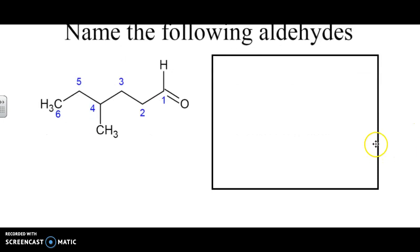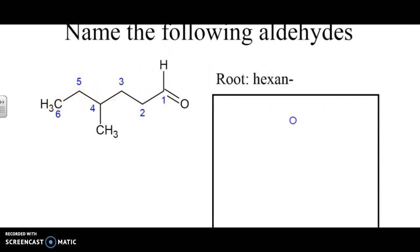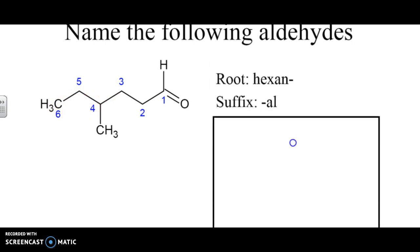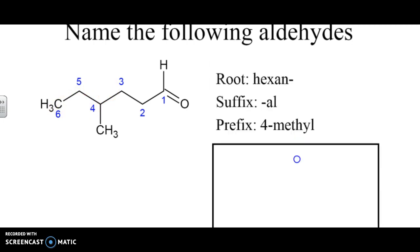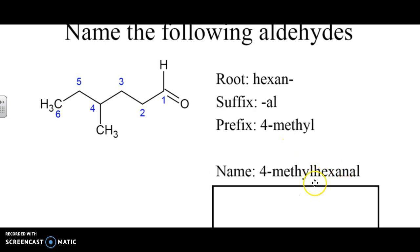If we're looking at this example right here, we can see methyl at spot four and it's a six-carbon chain. So six-carbon chain means it's a hexane. Then the suffix has to be an al because there's an aldehyde on the end, and the prefix is 4-methyl. So if we put it all together, it's 4-methyl hexanal.